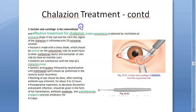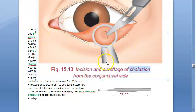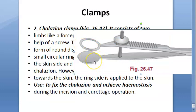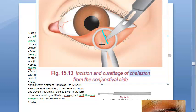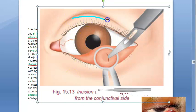For incision and curettage, a chalazion clamp is used — it has a ring on the conjunctival side to fix the chalazion and achieve hemostasis. A sharp blade makes a vertical incision from the conjunctival side to drain the chalazion, cutting through only one meibomian gland duct. If the approach is from the skin side (which is rare), a horizontal incision is made to minimize scarring.